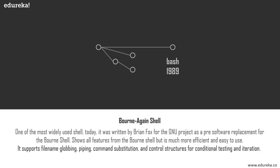Then we have bash, which still remains one of the most popular shells today. Written by Brian Fox for the GNU project as a free software replacement for the Bourne shell, it has been distributed widely as the default login shell for most Linux distributions and Apple's macOS. Bash supports filename globbing, piping, here documents, command substitution, brace expansion, command line completion, basic debugging, and exception handling using trap. The shell's name is an acronym for Bourne Again Shell — a pun on the Bourne shell it replaces. Its command syntax is a superset of the Bourne shell syntax, with ideas drawn from the Korn shell and C shell as well.